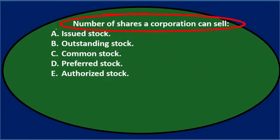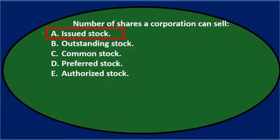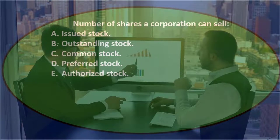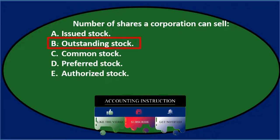Number of shares a corporation can sell. Option A — issued stock: we don't fully understand this term yet, so we'll keep it for now. Option B — outstanding stock: the terminology suggests shares already out in the market, meaning they've already been sold rather than available to sell, so outstanding stock doesn't appear to be the right answer. Option C — common stock.